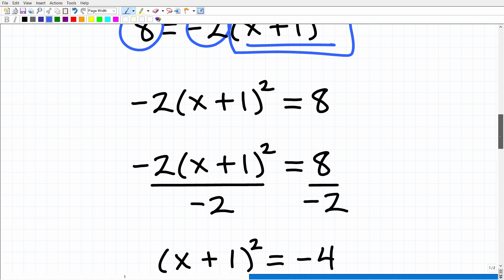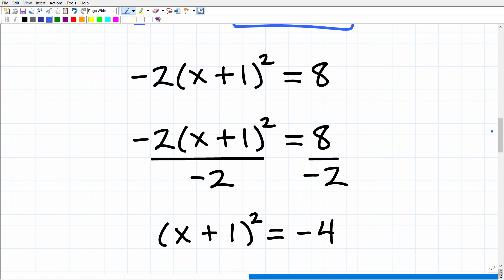So the easiest way is to isolate this power, (x + 1) squared, by dividing both sides of the equation by negative 2. And when you do that, you have 8 divided by negative 2, which of course is negative 4. All right, so now at this stage, we have (x + 1) squared equals negative 4.